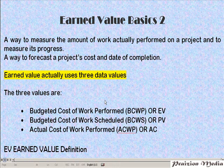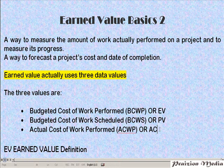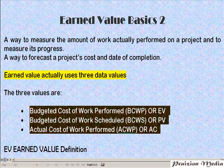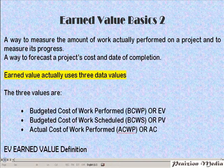These long acronyms — BCWP, BCWS, ACWP — are the core data values that form the core of the whole Earned Value calculations that we'll be looking at.